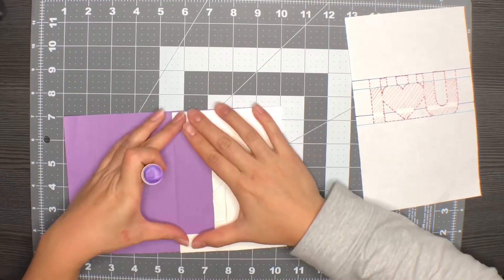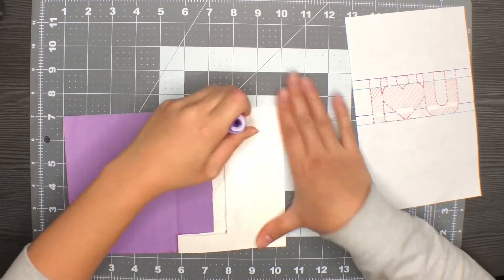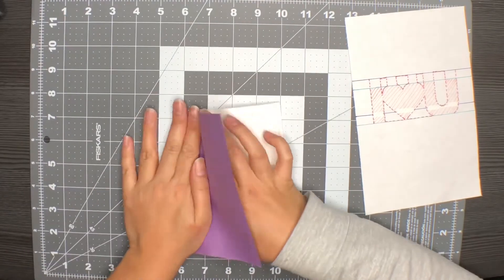Now for a pop of color, we are just going to use some construction paper and glue it to the outside of the card you just made.